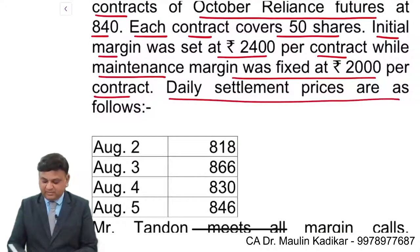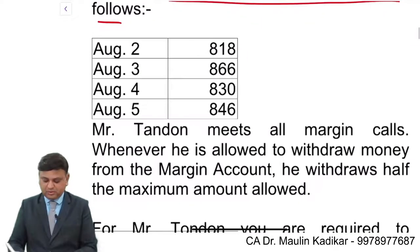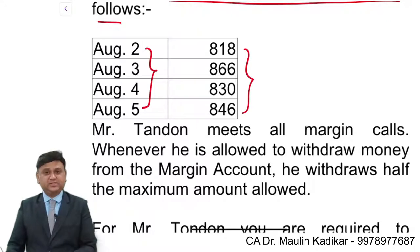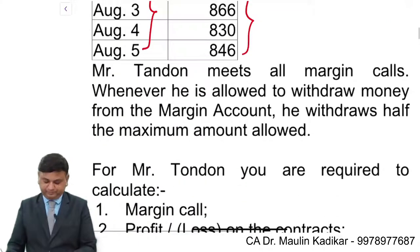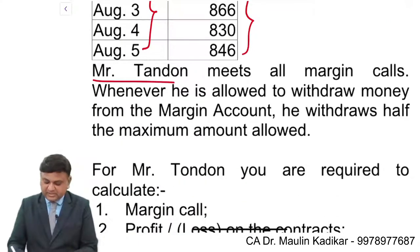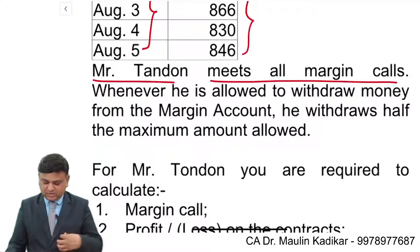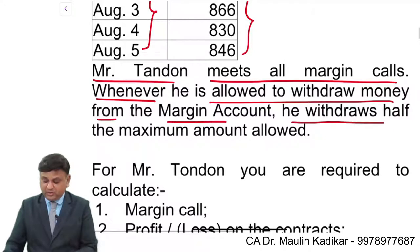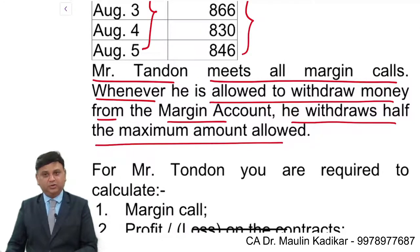Daily settlement prices are as follows — on a daily basis the closing prices are provided for settlement. Mr. Tundon meets all margin calls. Whenever he is allowed to withdraw money from the margin account, he withdraws half the maximum amount allowed.